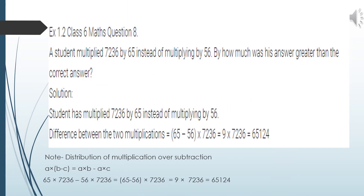Question eight: a student multiplied 7236 by 65 instead of multiplying by 56. By how much was his answer greater than the correct answer? By mistake the student multiplied 7236 by 65 instead of 56. We need the difference between the wrong answer and the correct answer. We first find the correct answer by multiplying 7236 by 56, then find the difference.